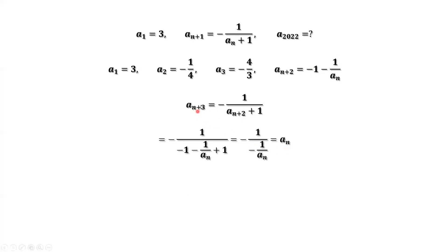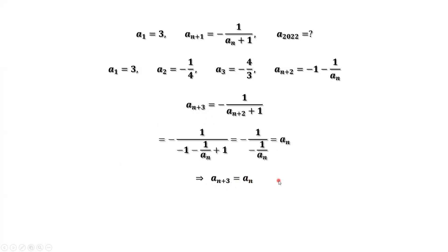Now we can see that 3 is the period — the length of the cycle. We call it a period. After three steps, an+3 comes back to an. This is the result: an+3 equals an.